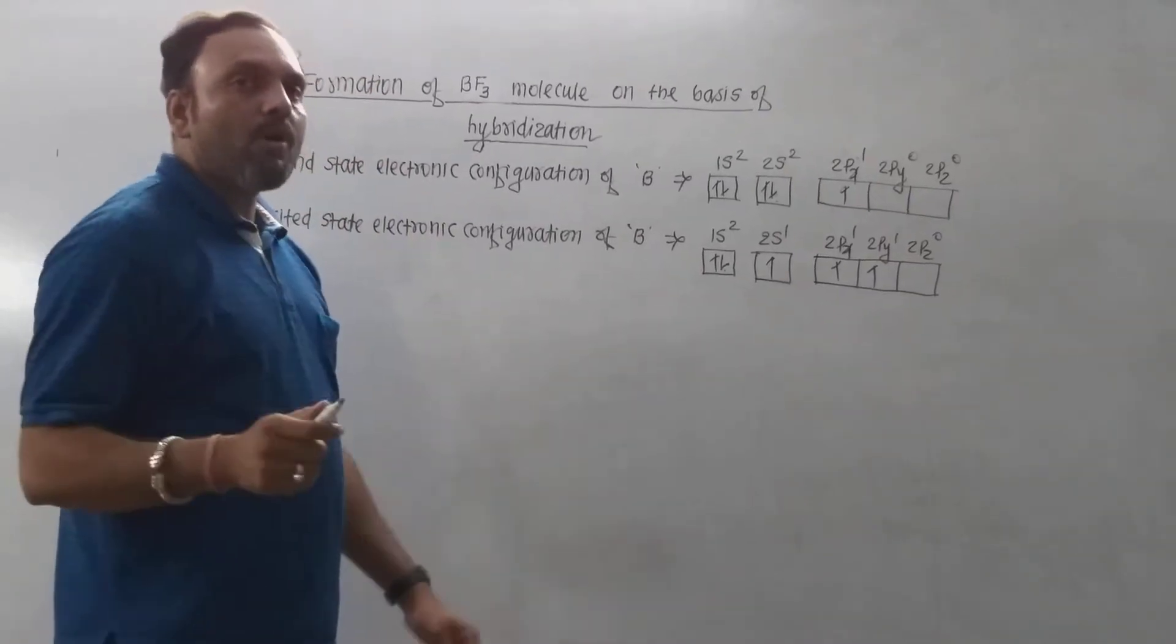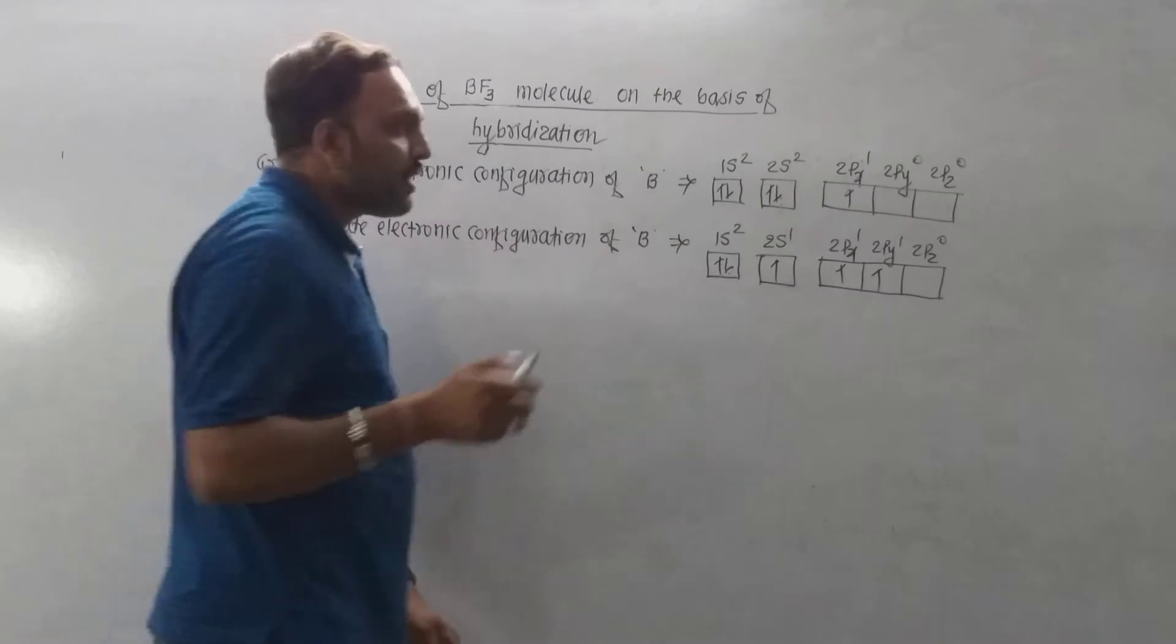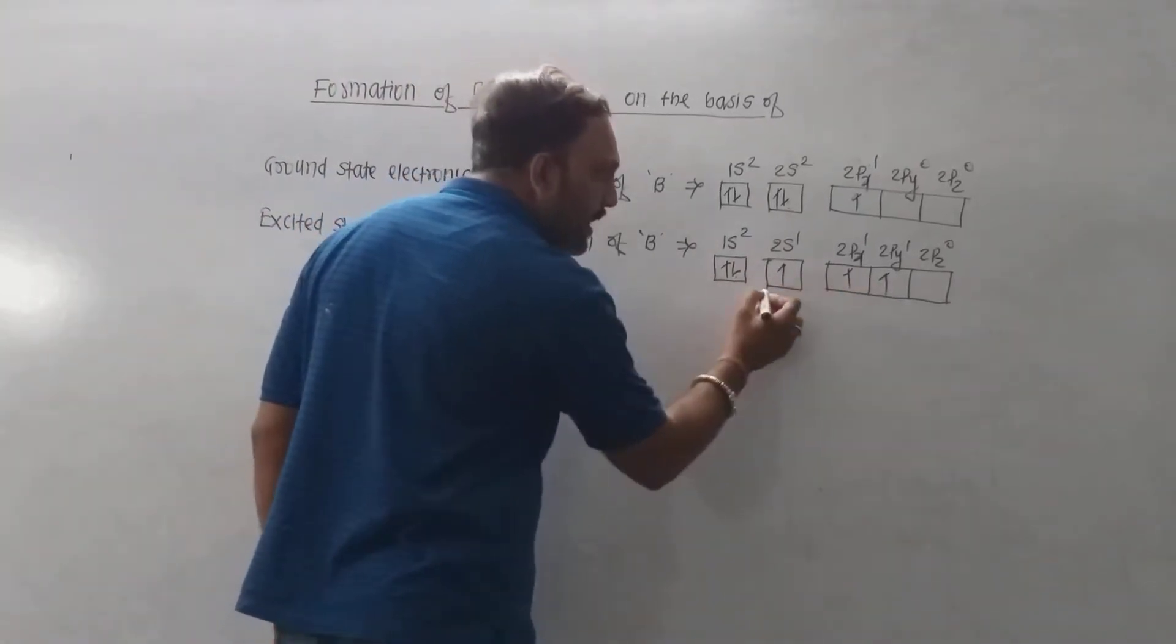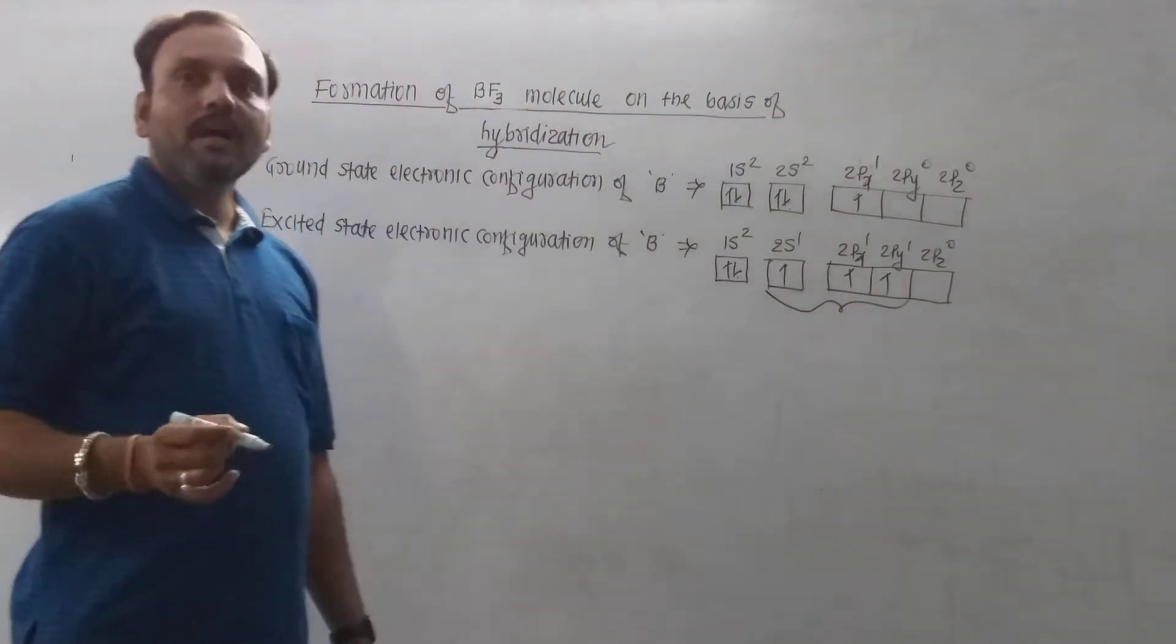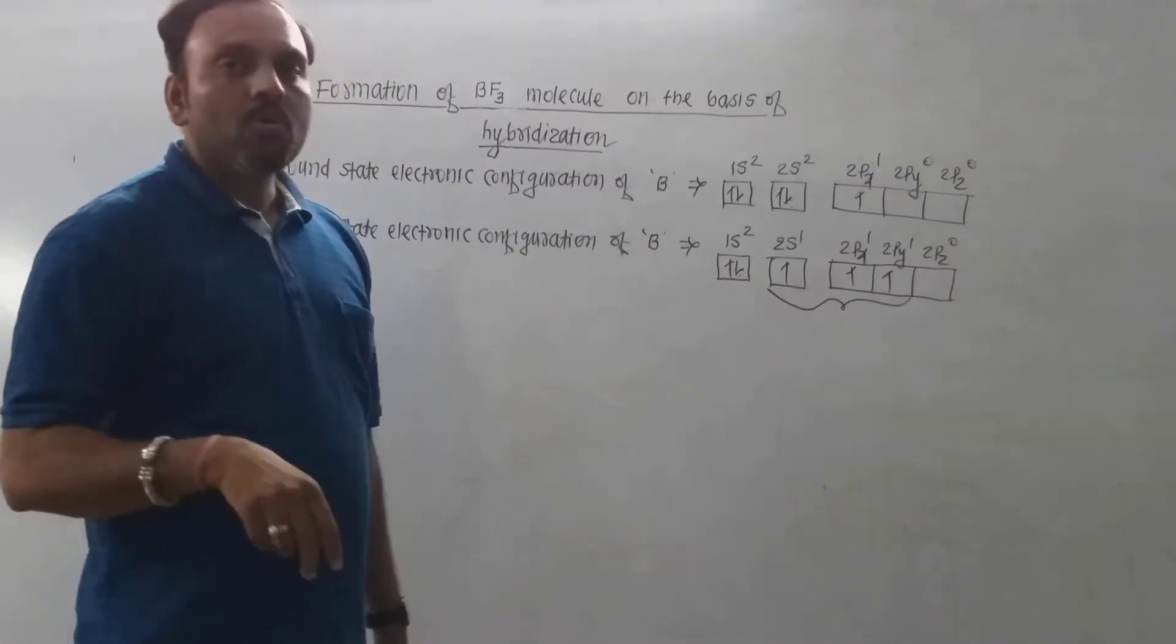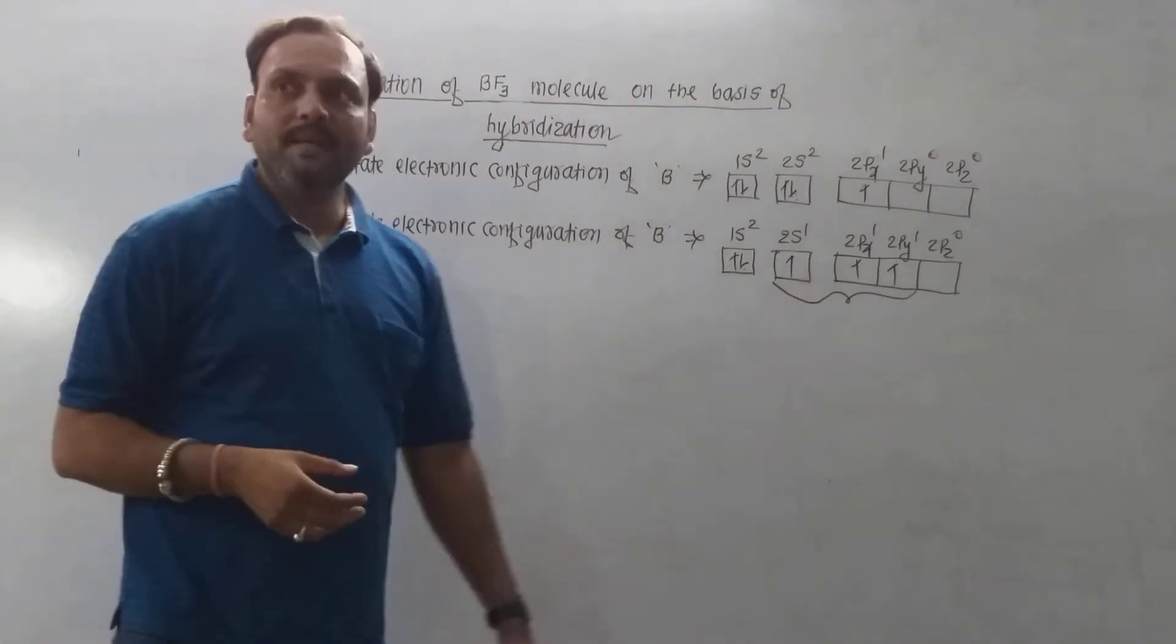Now, boron undergoes sp² hybridization by mixing one 2s and two 2p orbitals of the valence shell, due to which 3 sp² hybrid orbitals are obtained, which are maximally symmetric.